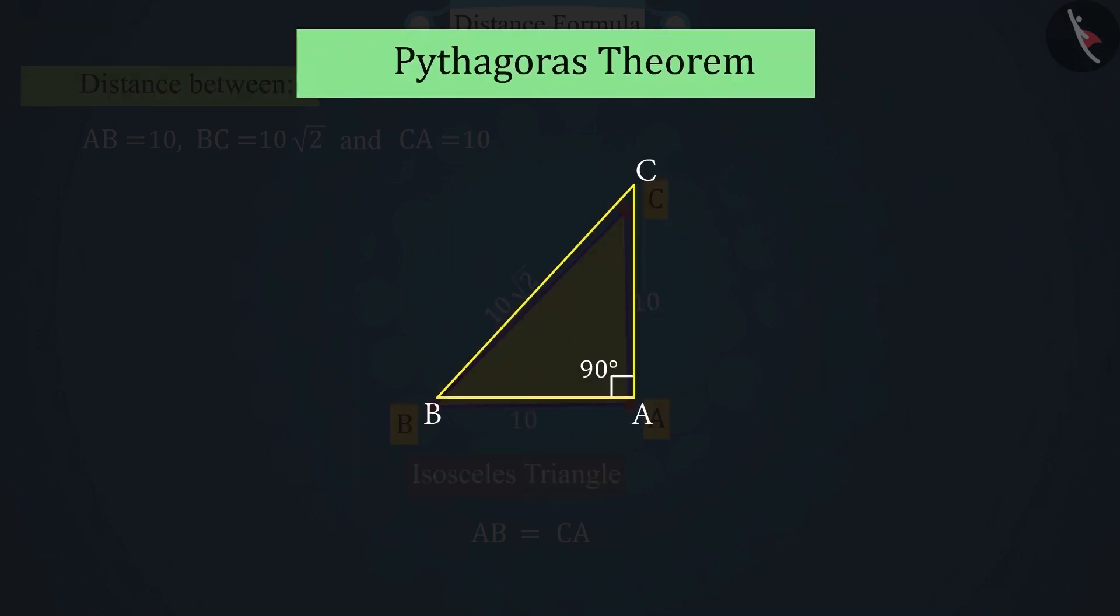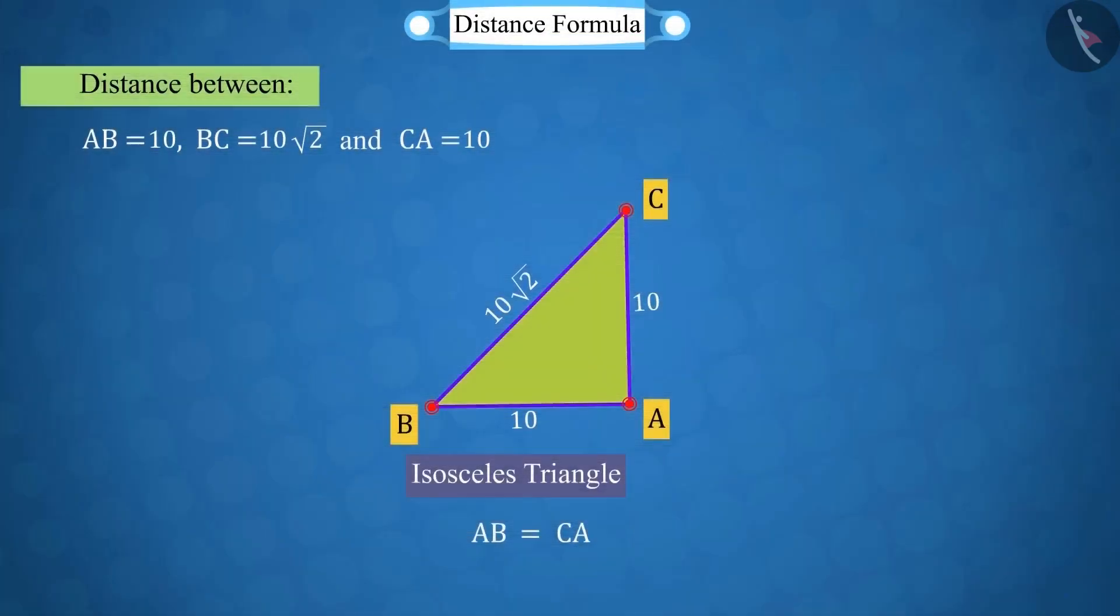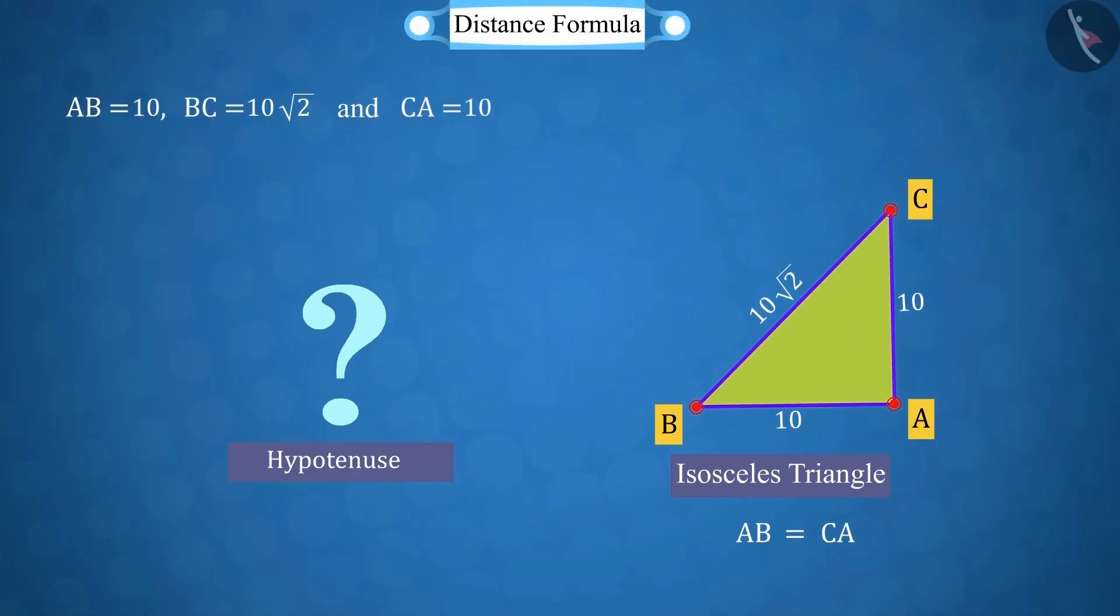Good! For this, we will use the Pythagoras theorem. First of all, can you tell from which of these three sides AB, BC, CA will be the hypotenuse?